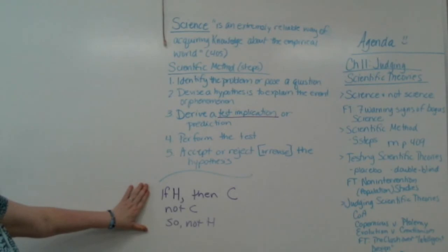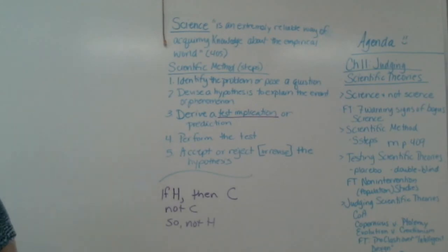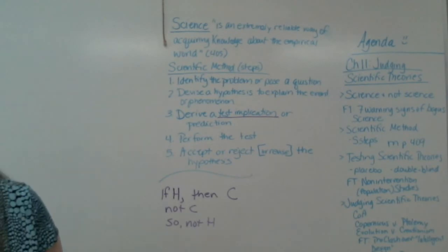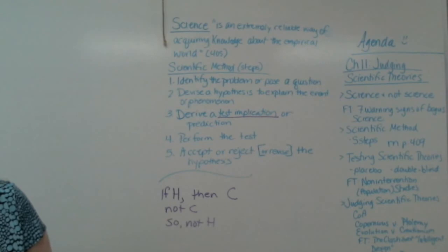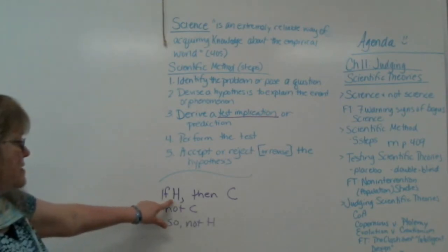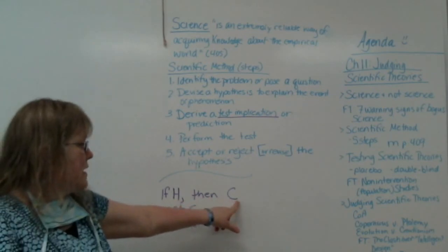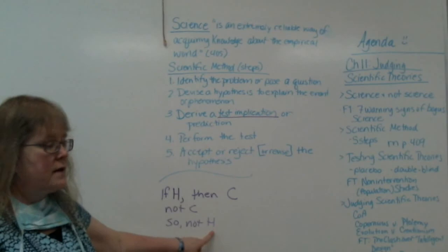We are not usually talking about deductive reasoning here, though this is a deductive argument. H would be proven false even if only one of several consequences turned out to be false. So if our hypothesis is correct, then we get this consequence; we didn't get the consequence, so our hypothesis is not correct. And this is good because it's valid.